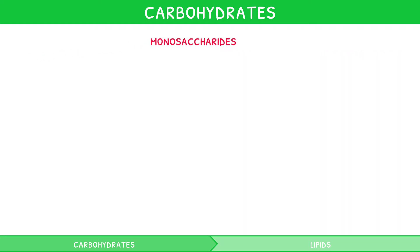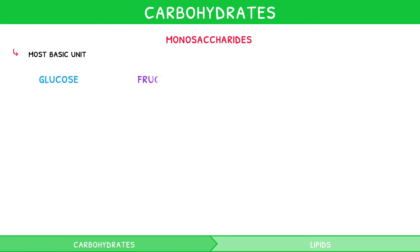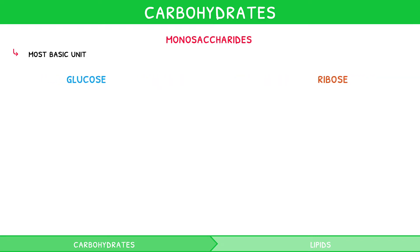Monosaccharides are the most basic unit. Common monosaccharides discussed in the IB Biology syllabus are glucose, fructose, galactose and ribose. You should know the structure of glucose and ribose in detail, so let's explore them.